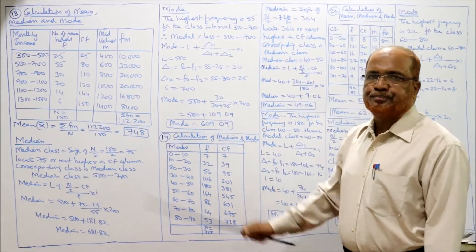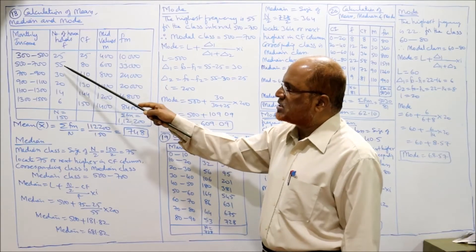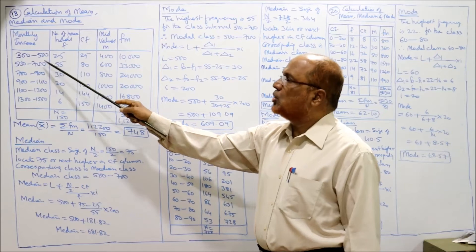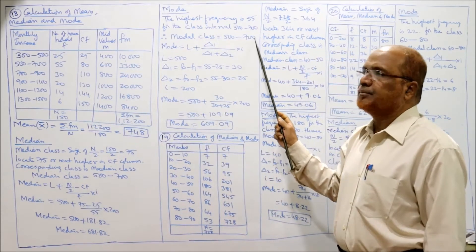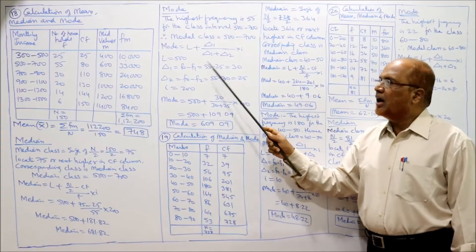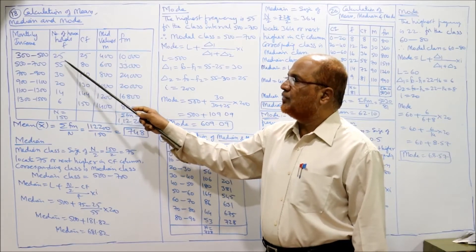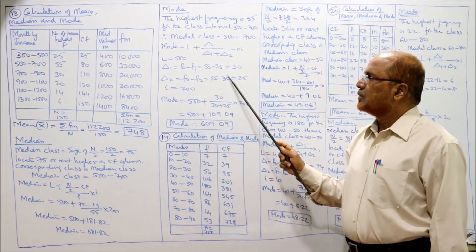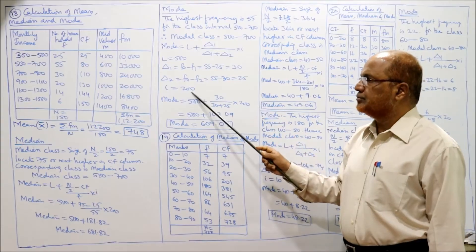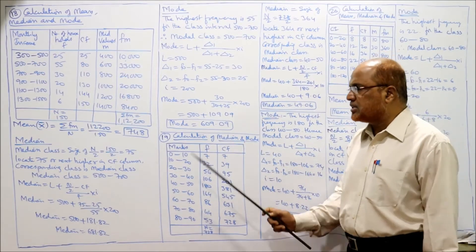Now we calculate the mode. By inspection, the highest frequency is 55, against the class interval 500–700. So the modal class is 500–700. Mode = L + [Δ1 / (Δ1 + Δ2)] × I. Lower limit = 500, Δ1 = F_modal − F_pre = 55−25 = 30, Δ2 = F_modal − F_post = 55−30 = 25, I = 200. Mode = 500 + [30/(30+25)] × 200 = 500 + 109.09 = 609.09.